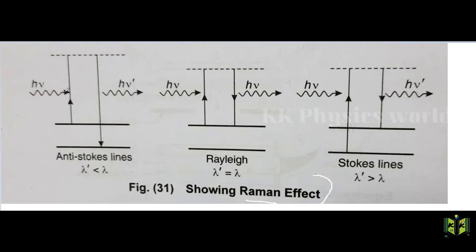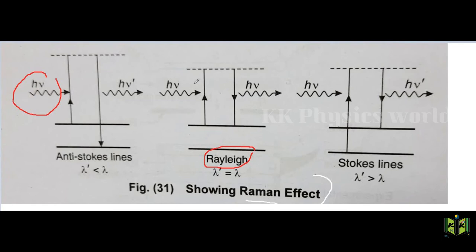Here we see the anti-Stokes line spectrum, where the incident beam is Hν. In anti-Stokes lines, lambda-dash is less than lambda, where lambda-dash is the wavelength of the scattered light and lambda is the wavelength of the incident light. In Rayleigh scattering, the frequency of the scattered beam equals the frequency of the incident beam. In Stokes lines, the frequency of the scattered beam is less than the frequency of the incident beam.